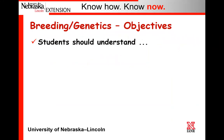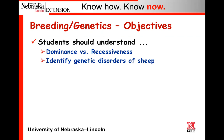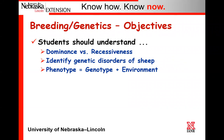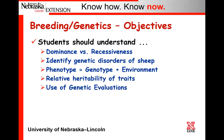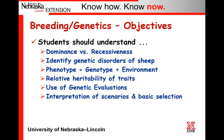In this particular station, students should be able to understand differences between dominance and recessiveness, should be able to work out a Punnett Square, should be able to identify basic genetic disorders of sheep, discuss phenotype, the fact that it is a combination of both genetics and environmental influence, and they should understand the relative heritability of traits. They should be able to utilize genetic evaluations from the National Sheep Improvement Program, and interpret scenarios and utilize basic selection methods.